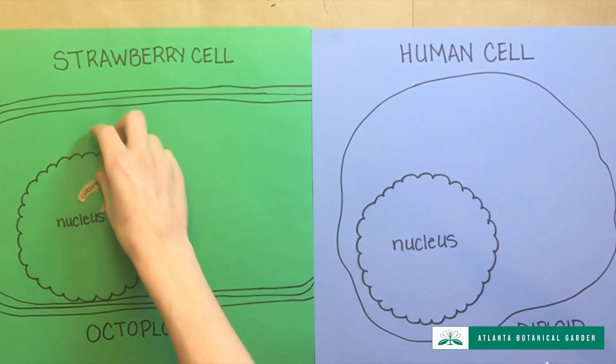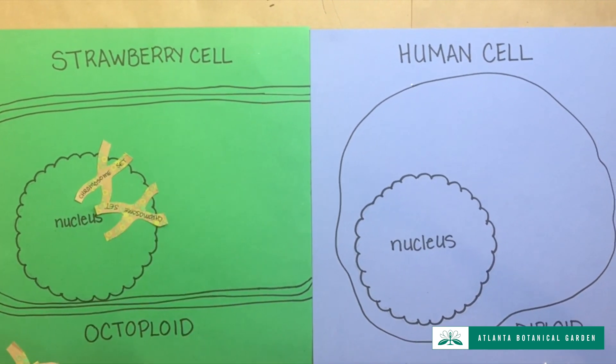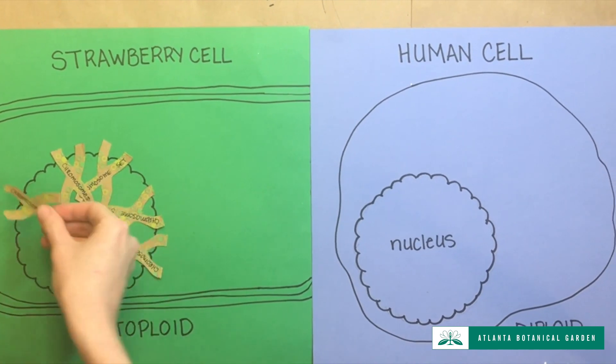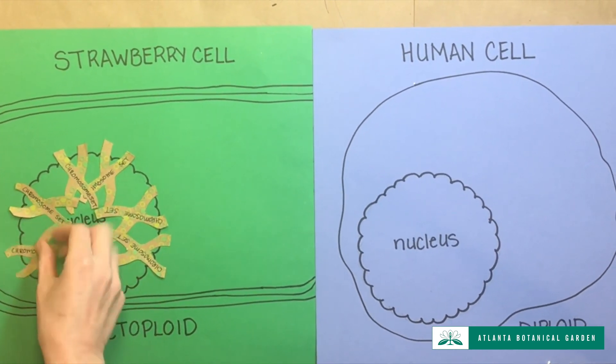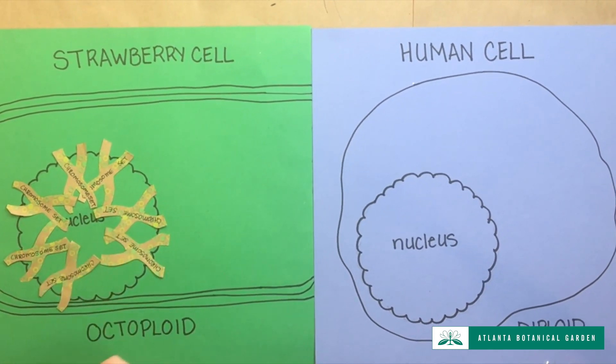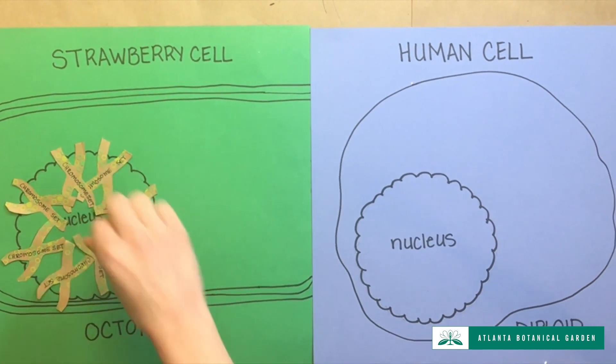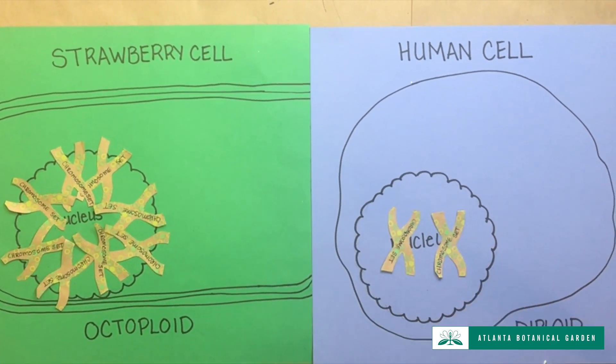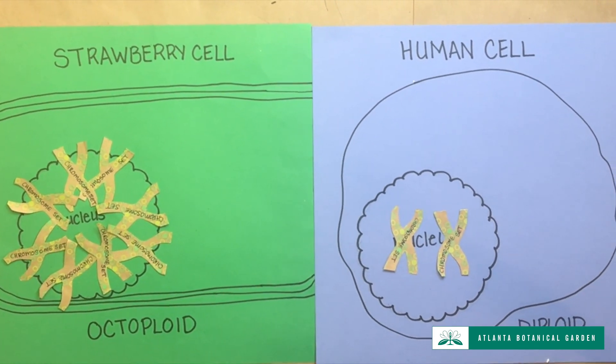Octoploid means that inside every single strawberry cell there are eight sets of chromosomes with DNA. Humans and many other plants and animals are diploid, meaning that inside of every one of their cells there are only two sets of chromosomes with DNA.